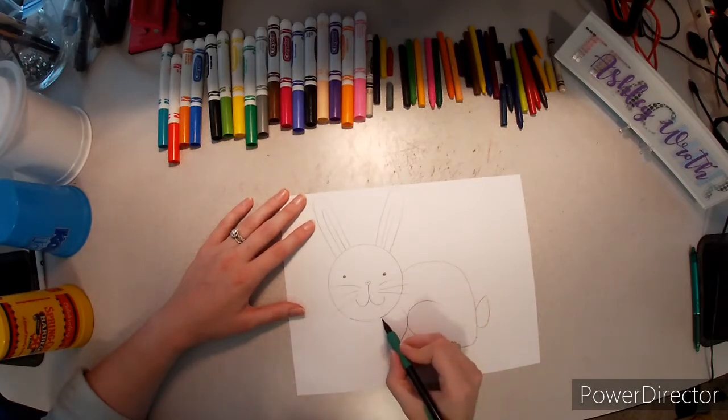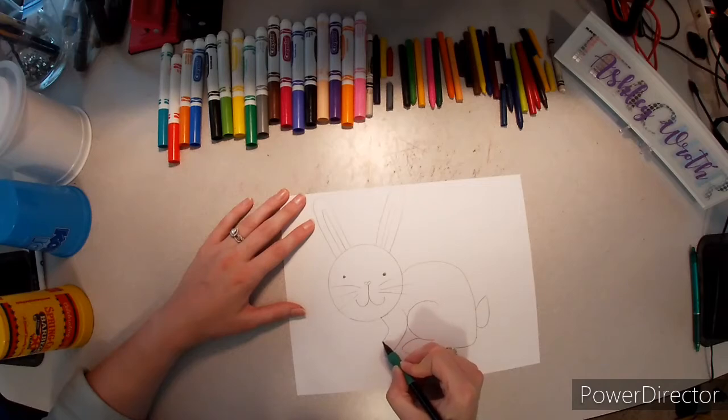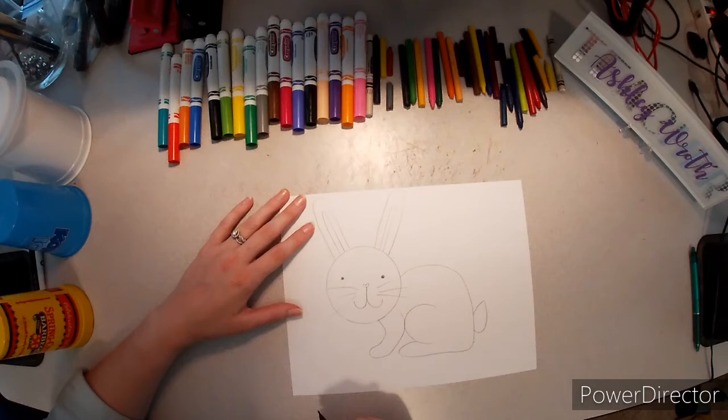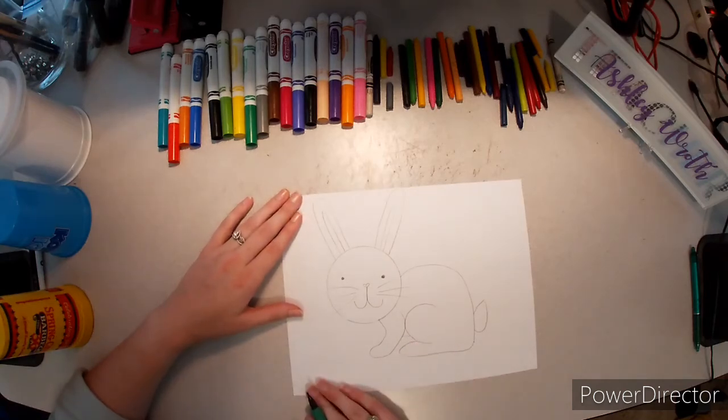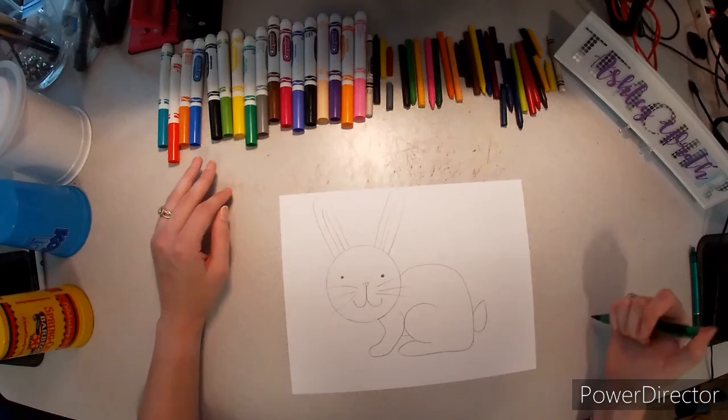Now, from his chinny chin chin, we are going to do a line that kind of follows this, and then curves around for his front paw. Then we can do a little curve between the front arm and the back leg for his belly. And that is our bunny rabbit. All we have to do left is color it in.